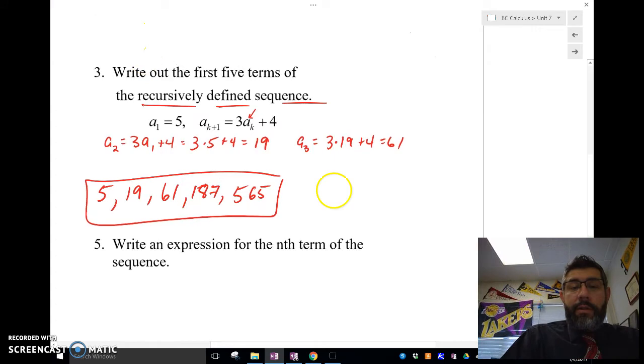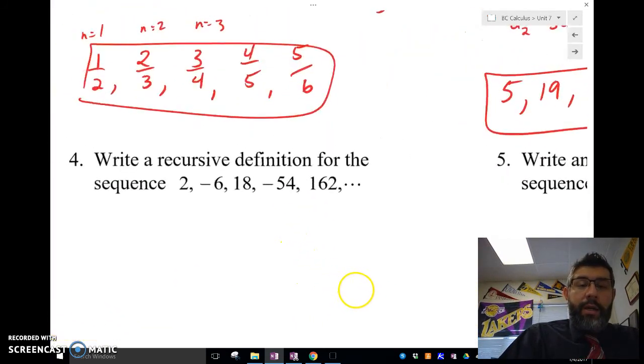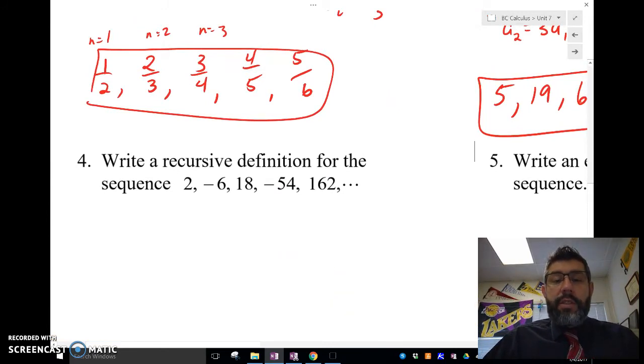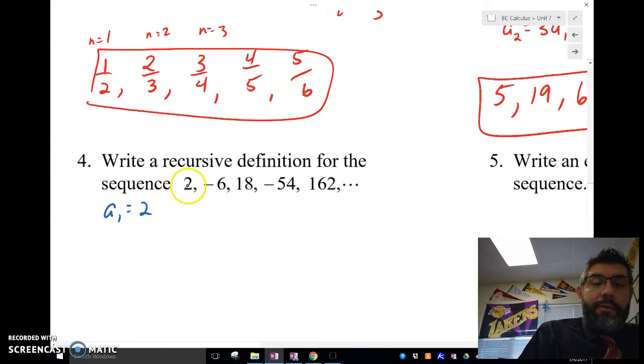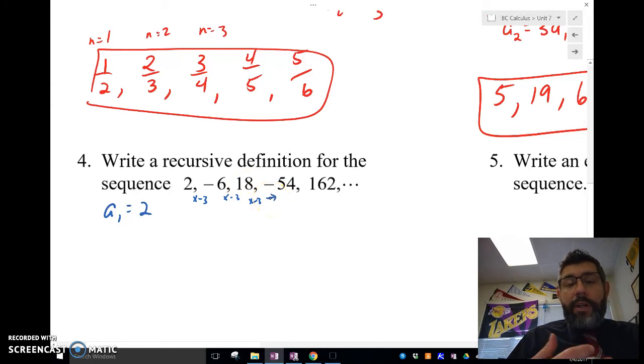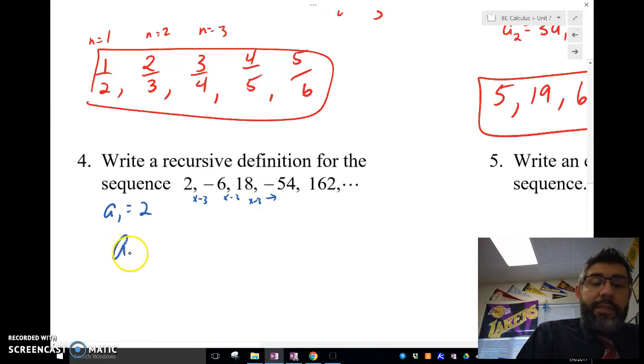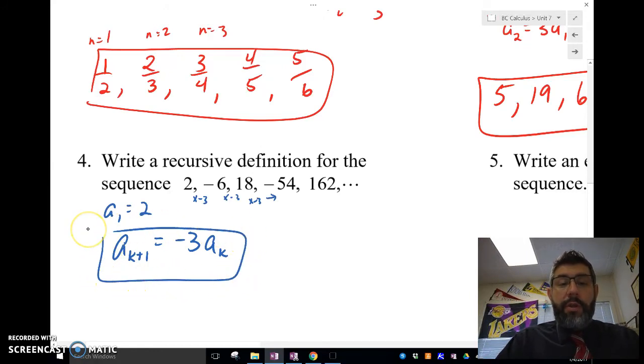Let's take a look at another one here. Write a recursive definition for the sequence 2, -6, 18, -54, and 162. We're doing a recursive definition, so we've got to figure out what do we need to do to 2 to get to -6. If a_1 is 2, how do we get 2 to -6? Well I can multiply by -3. Let's see if that works each time. If I multiply by -3 to -6, do I get 18? I do. If I multiply -3 from 18, do I get -54? I do. So each time if I just multiply by -3, I'm going to get the next one. So I'm going to say that a_{k+1}, my next term, is going to be -3 times my kth term, my previous term. And this would be my recursive definition.